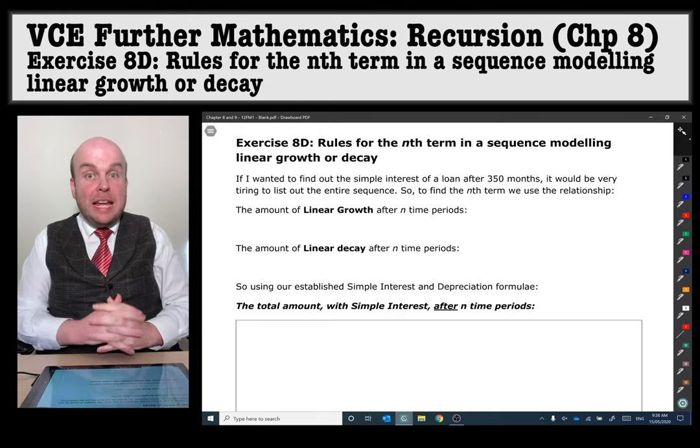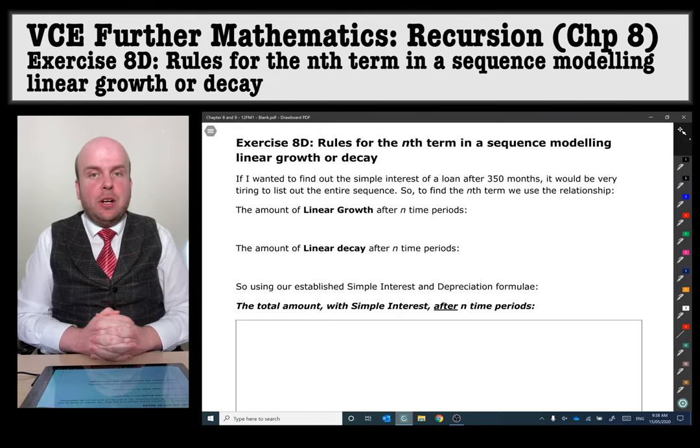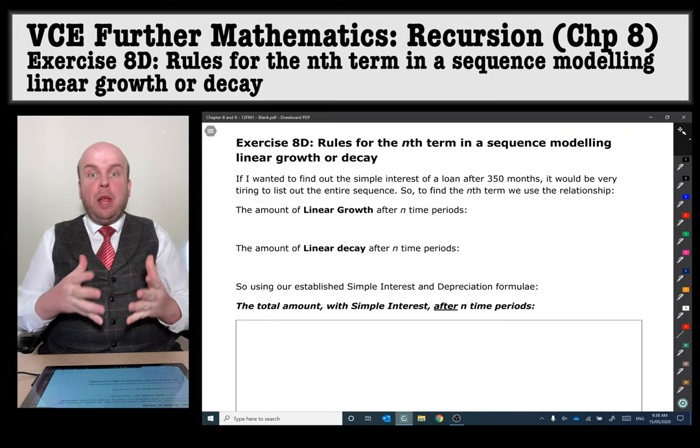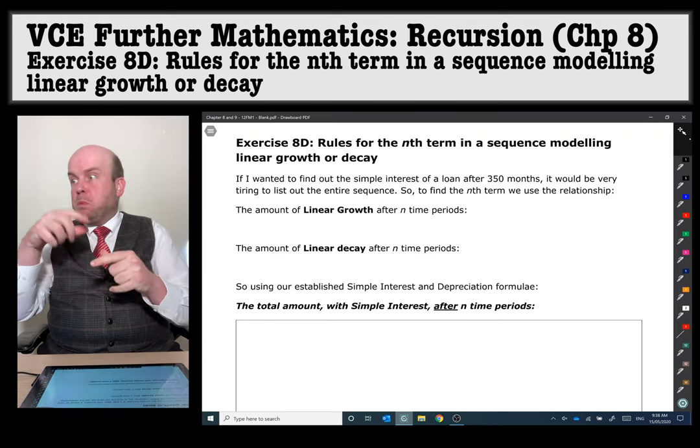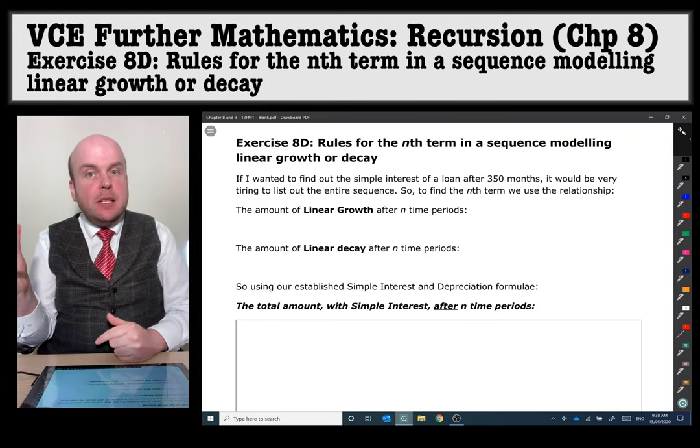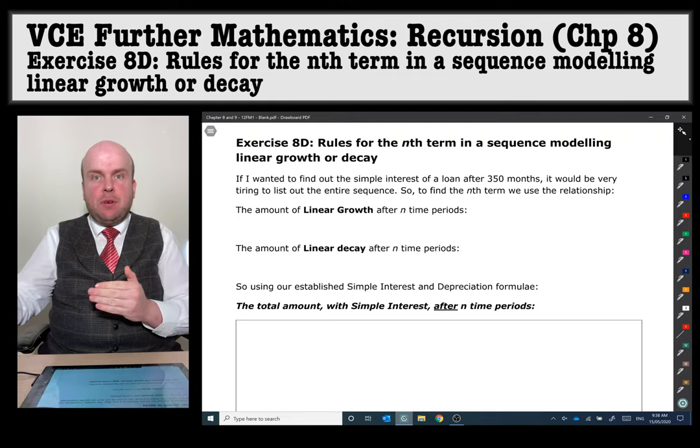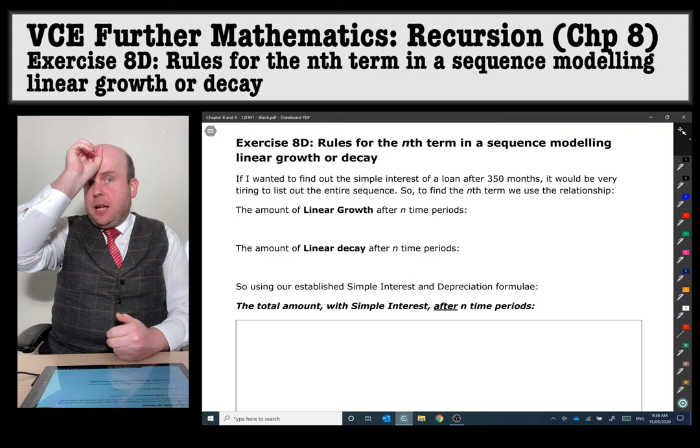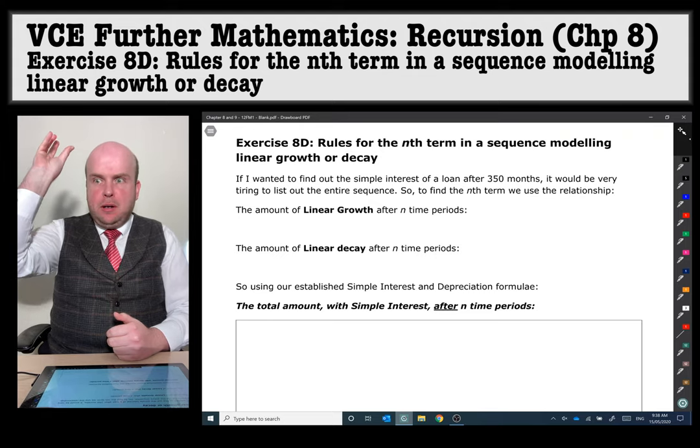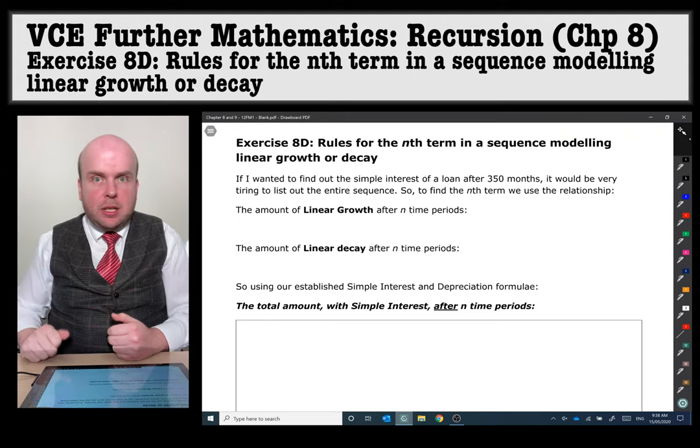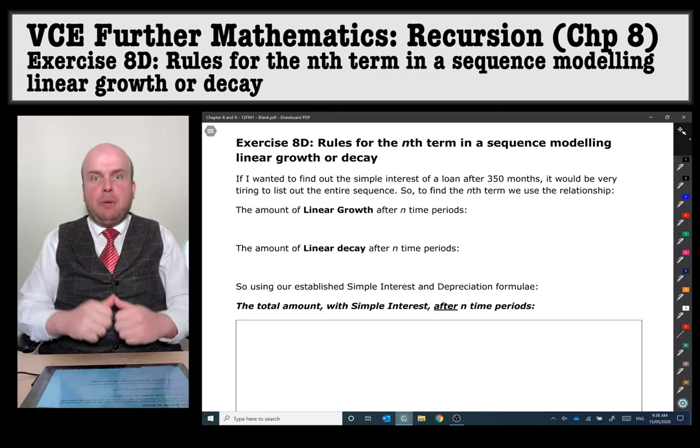Rules for the nth term in a sequence modeling linear growth or decay. This is all about finding what the specific payment is after a loan for several months. If I want to find the payment on month 27, what's it going to be? So this is all relating to that.